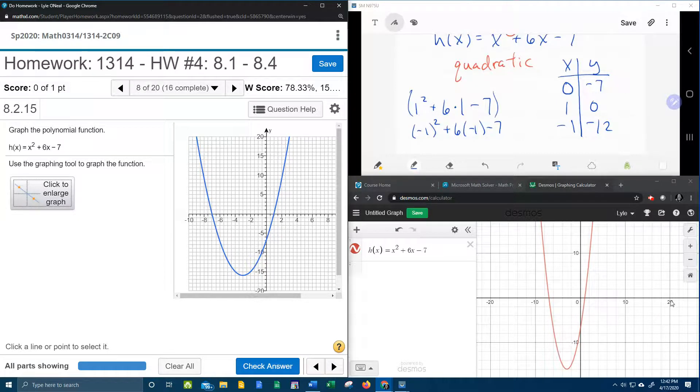Notice the x axis is going from 20 to negative 20, this one only goes from negative 10 to 10, so it looks a little bit different, but you can use Desmos to check and see if it looks right.